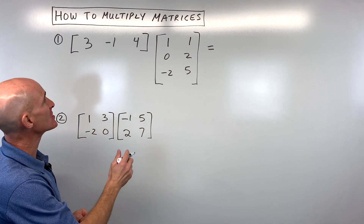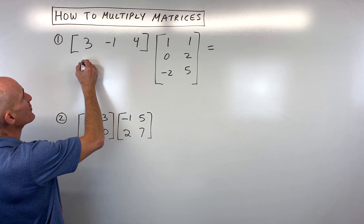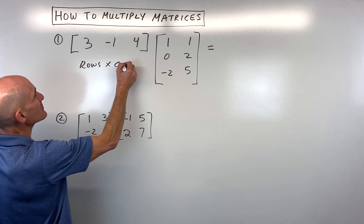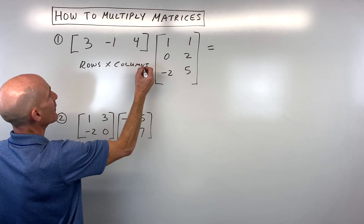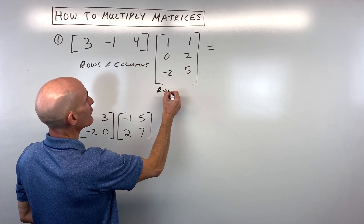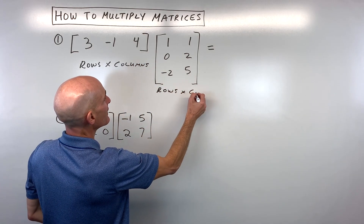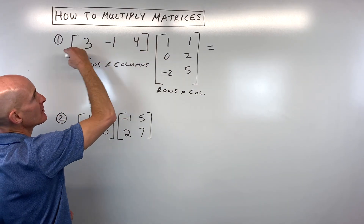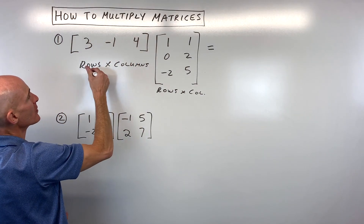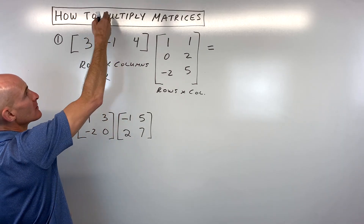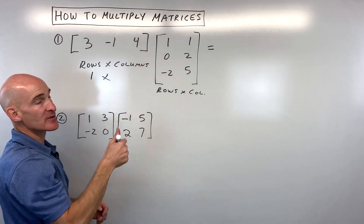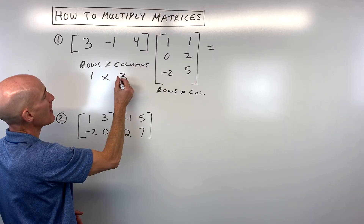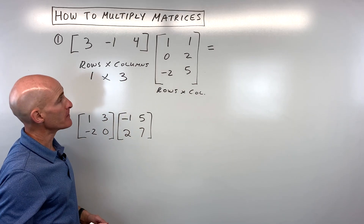So what do I mean by the dimensions? You want to always figure out what the rows are by the columns. The rows go this way — we can see there's one row here. And the columns go like Roman columns, in the vertical direction. So we can see one, two, three — so we have a one by three matrix here.